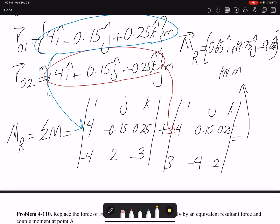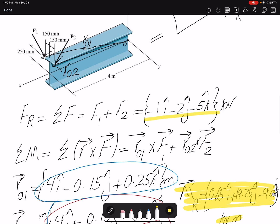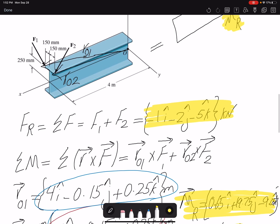So our answer is this moment and this resultant force. We can replace this beam with this FR and this MR. And the two beams would be equivalent.